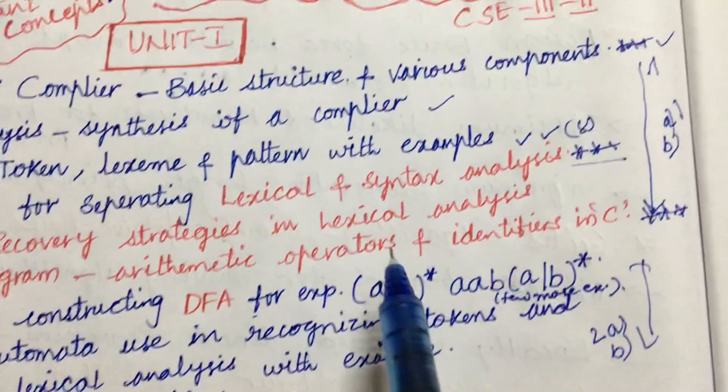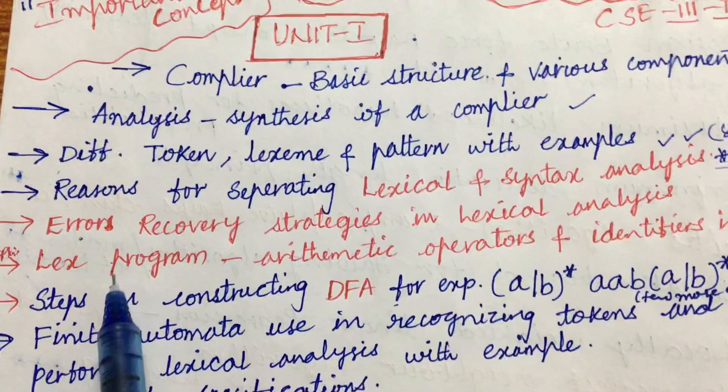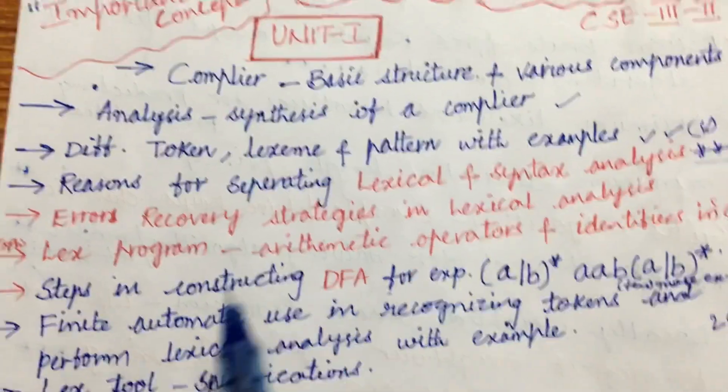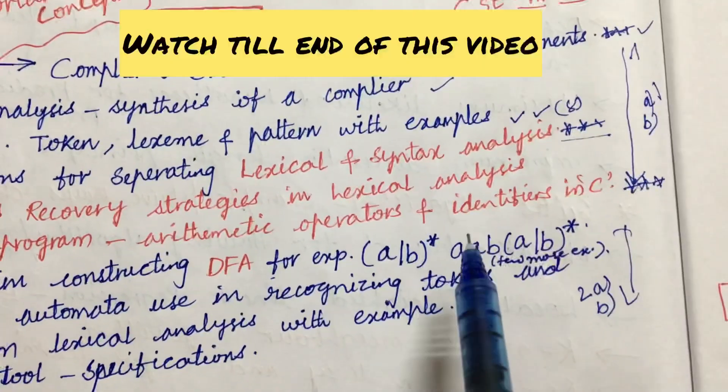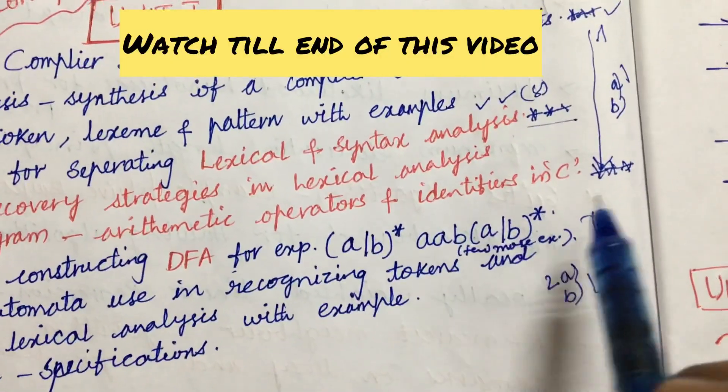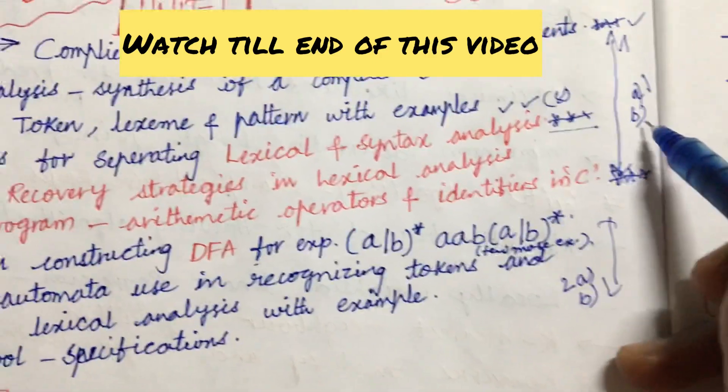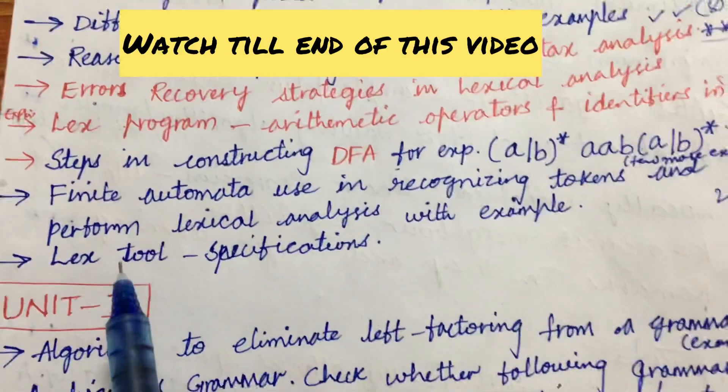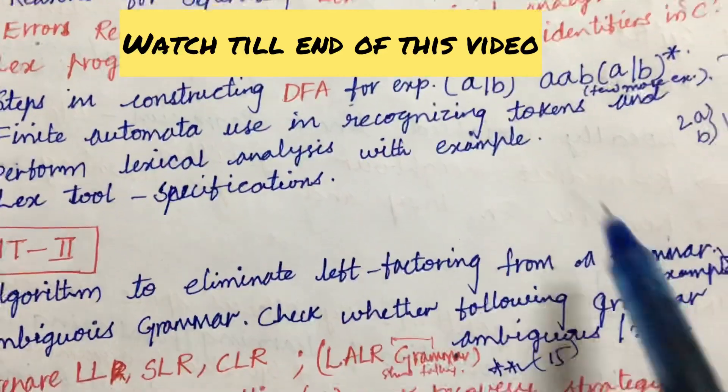Later, the errors recovery and strategies in lexical analysis and the lex program arithmetic operators and the identifiers in the C program language. Later, we are going to expect till here one question, that is 1a and 1b, which is of seven and eight mark split. Later, let's look at the steps in constructing DFA for expression given. There will be several expressions given but related to DFA.